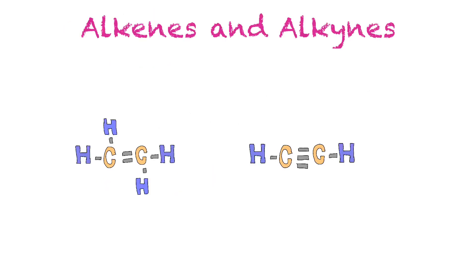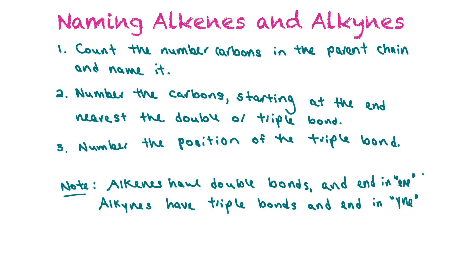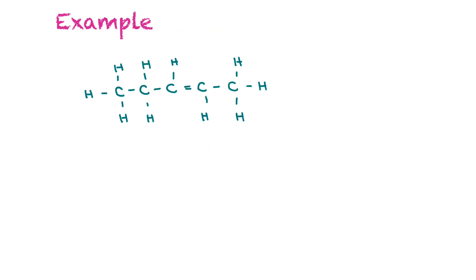Now that we're experts at alkanes and branched alkanes, we'll learn how to draw alkenes and alkynes. To name them, count the carbons in the parent chain, then number the carbons starting at the end nearest the double or triple bond, and note the position of the multiple bond. Remember: alkenes have double bonds and end in 'ene', and alkynes have triple bonds and end in 'yne'. For example, with the double bond closer to the right, we number one through five and name where the double bond starts — between carbons two and three — so this is 2-pentene.